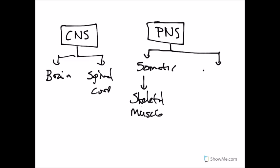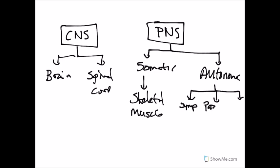Then there is the autonomic, which allows you to do the things you need to do without thinking about doing it. The autonomic nervous system has three smaller subdivisions: the sympathetic, the parasympathetic, and the enteric divisions.